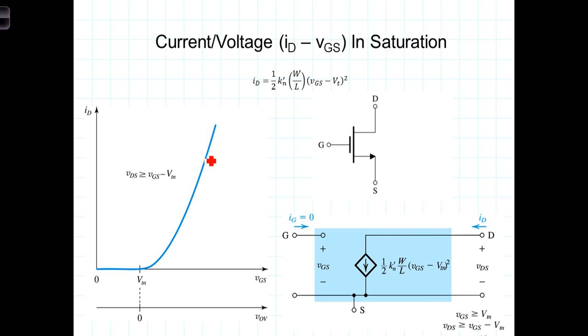Thus, in saturation, we can use the field-effect transistor to provide amplification. And in fact, we can think of the field-effect transistor as a voltage-controlled current source.